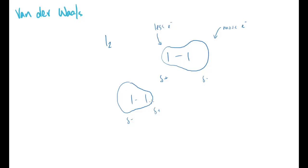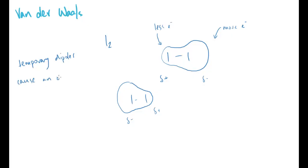In a group of many molecules together, this random switching is happening all the time. One molecule becomes delta negative on one side, which is attracted to the delta positive of the next molecule. There are constant attractions occurring, constantly switching — but the overall effect is that these temporary dipoles cause an overall attraction between molecules.